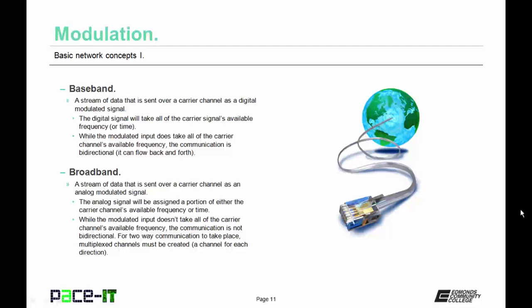Let's talk about the difference between a baseband and broadband carrier channel. A simple definition of baseband is a stream of data that is sent over a carrier channel as a digital modulated signal. The digital signal will take all of the carrier signal's available frequency or time. While the modulated input does take all of the carrier channel's available frequency, the communication is bi-directional — it can flow back and forth. A simple definition of a broadband carrier channel is a stream of data that is sent over a carrier channel as an analog modulated signal. The analog signal will be assigned a portion of either the carrier channel's available frequency or time. While the modulated input doesn't take all of the carrier channel's available frequency, the communication is not bi-directional. For two-way communication to take place, multiplex channels must be created — that is, a channel for each direction.